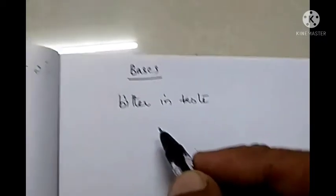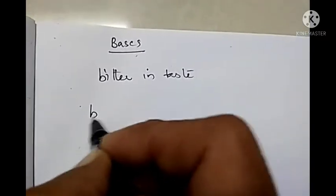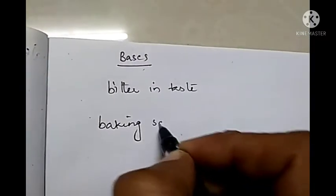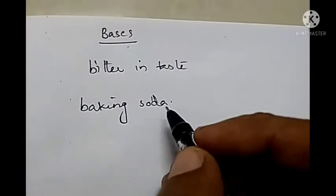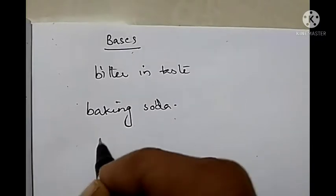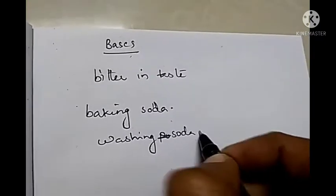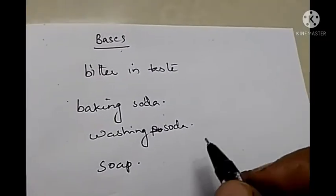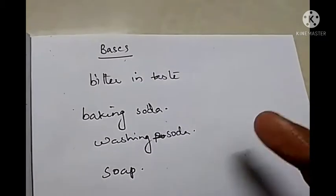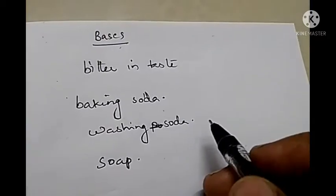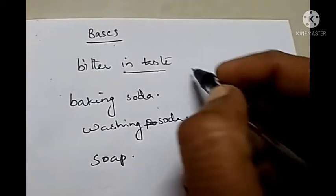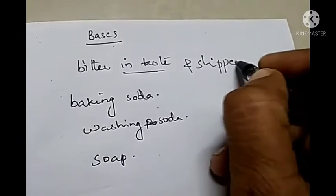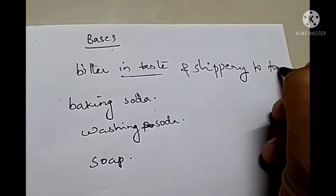Now we can study about bases. Bases are bitter in taste. The substances which have a bitter taste can be called as basic substances. For example, baking soda — which is bitter in taste, so it is basic in nature. Like that, washing soda, which is our detergent powder, and soap — all these are having a bitter taste. And when we are touching washing soda and soap, we feel a slippery sensation. The substances which are bitter in taste and slippery or soapy to touch can be called as bases.